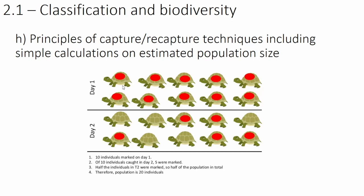That's it for this video on quadrats and how we use them for sampling. Next time we'll be moving on to principles of capture and recapture techniques, including some simple calculations on estimated population size. Capture and recapture is more to do with animals. Today we learned about plants. Next time it will be about sampling animals, and this is a higher tier topic. So if you're doing foundations, skip this next video and go to the end.